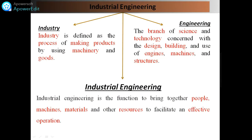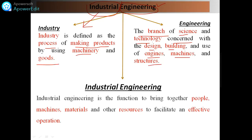The industrial engineering subject is distributed in two parts: industrial and engineering. Industry is defined as the process of making products by using machinery and goods. Engineering is the branch of science and technology concerned with design, building, and use of engines, machines, and structures. This is a generalized definition for engineering and for industry.